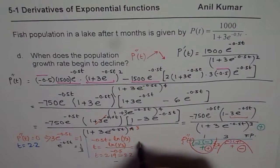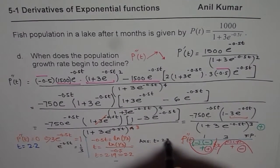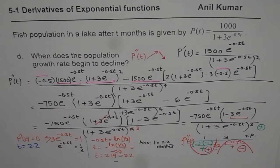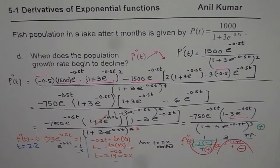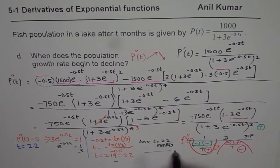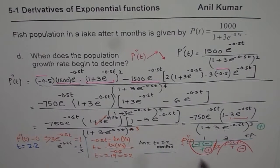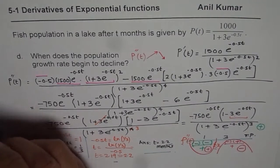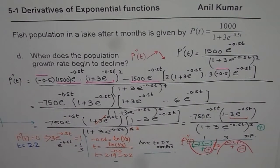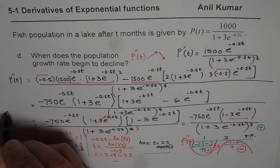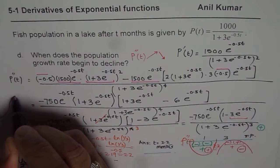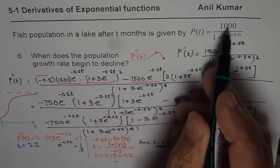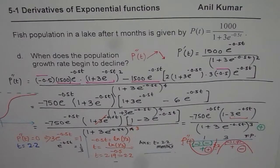That is the result. At t equals 2.2 months, after 2.2 months, the population growth rate begins to decline. It changes its concavity, meaning the population growth rate begins to decline. As an exercise, sketch the function p of t equals 1000 over 1 plus 3 e to the power of minus 0.5 t. You should expect a graph that is concave up initially, then concave down, flattening to the maximum capacity of 1000.